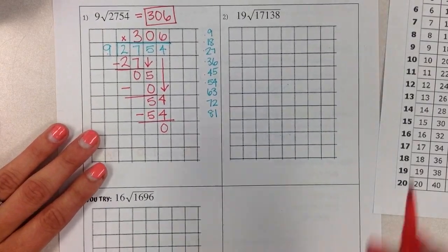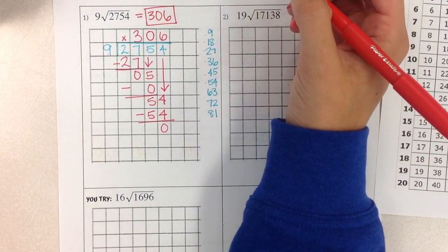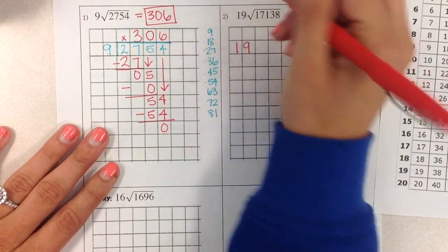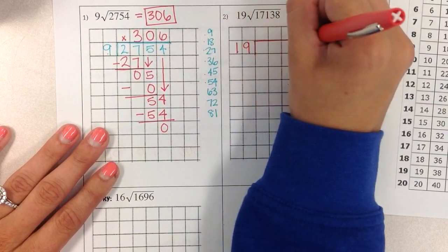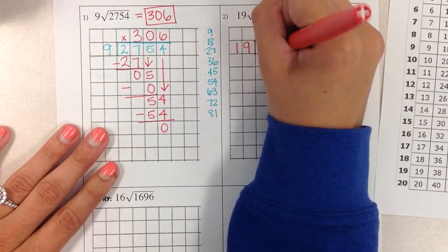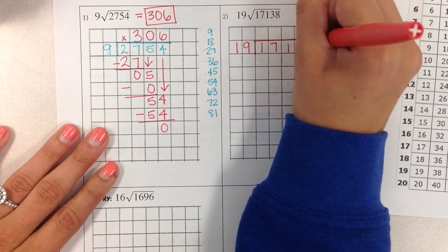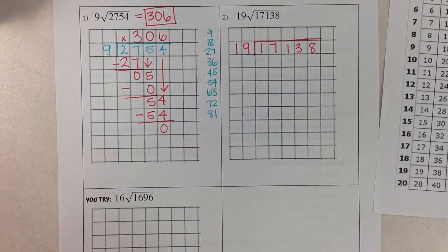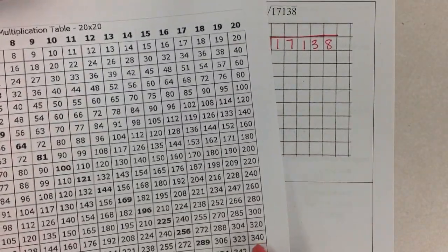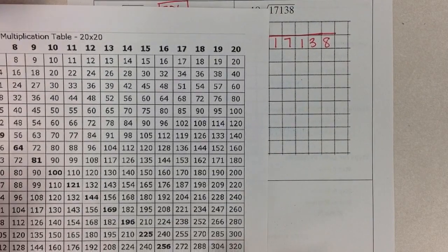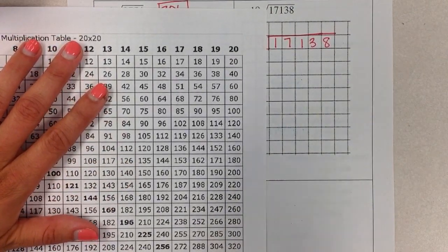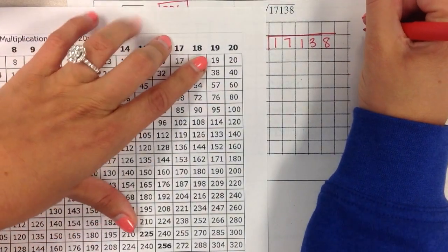Let's do one more together. Now we've got a bigger number that we're dividing by. We've got 19 as our divisor. What we're dividing is 17,138. So again, first step that I want you to do is to use your multiplication chart to list out the first 9 multiples. Because I don't know about you, but I don't have my multiples of 19 memorized.